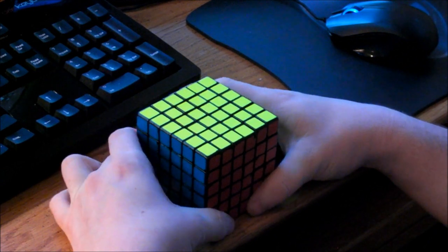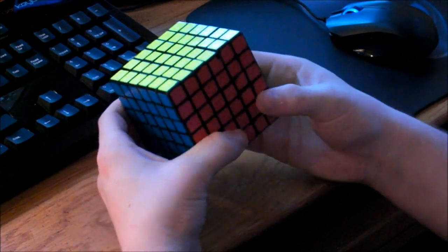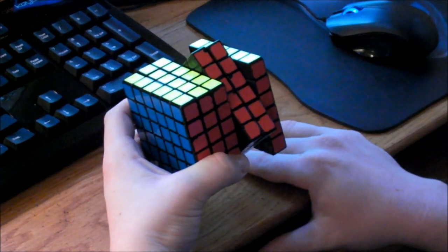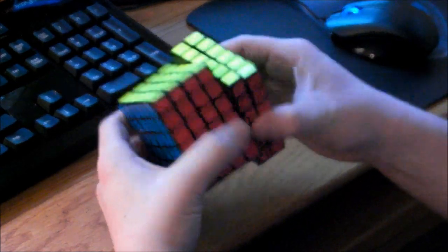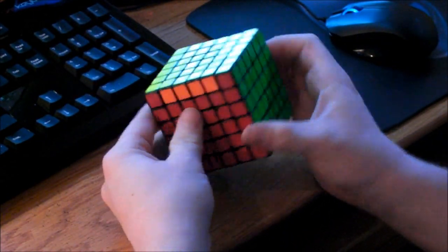And now for PLL parity, it is the exact same as on the 4x4, except when you're doing inner layers, you want to do both of these two, not just one. Easy as pie.